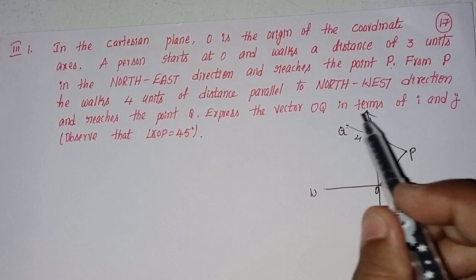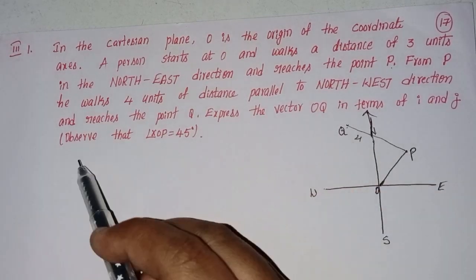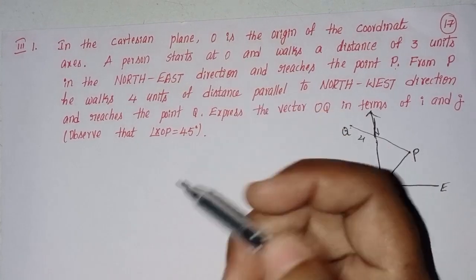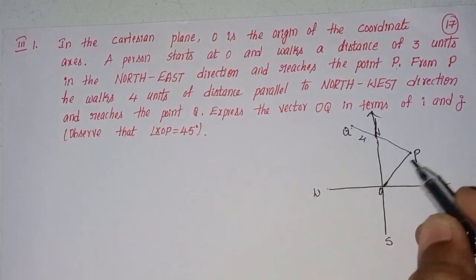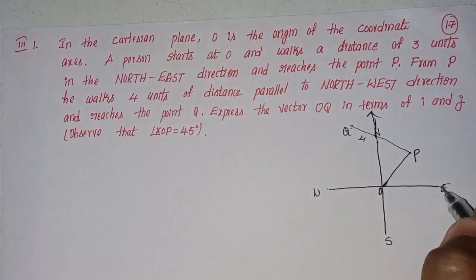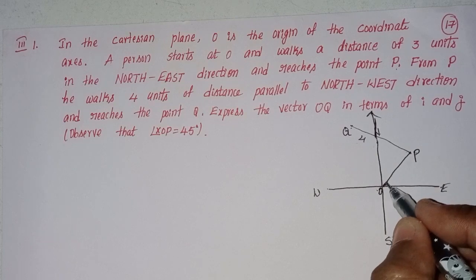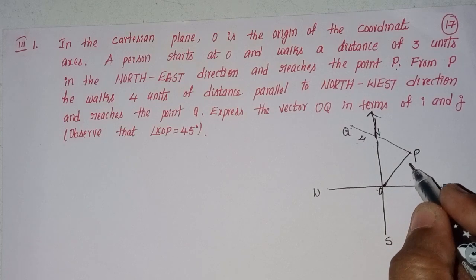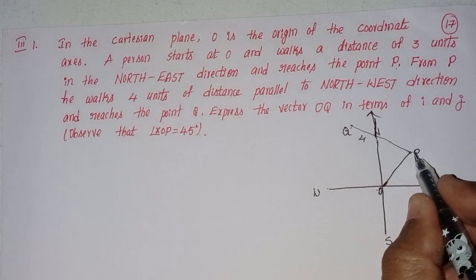We need to express OQ in terms of i and j. This is the diagram: angle XOP, where X is on the x-axis, O is origin, P is the point. The angle is 45 degrees, and this line is parallel.